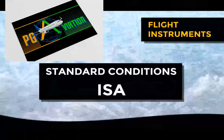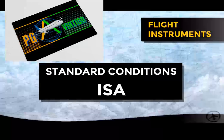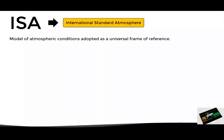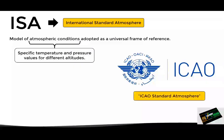Today, we will talk about the ISA atmosphere, also known as standard conditions in aviation. First of all, let's see what ISA stands for. ISA is the acronym for International Standard Atmosphere. This is a model of atmospheric conditions adopted as a universal frame of reference. The atmospheric conditions described in this model refer mainly to air pressure and temperature values at different altitudes. This model was created by the International Civil Aviation Organization in the 1950s, and that's the reason why the acronym ISA is sometimes interpreted as ICAO Standard Atmosphere.